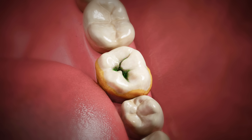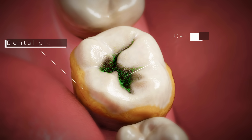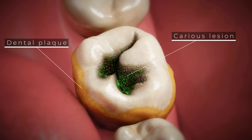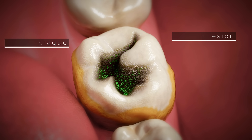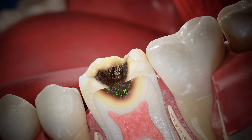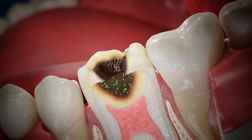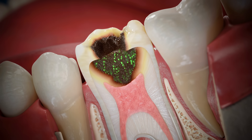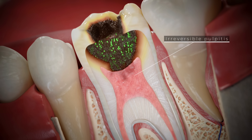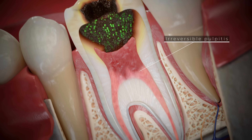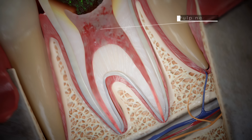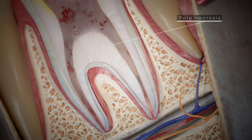Microorganisms that form dental plaque play a key role in the development of caries and its complications. These bacteria quickly break down carbohydrates, generating organic acids that cause mineral breakdown and destruction within tooth tissues, enamel, and dentin.